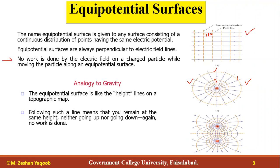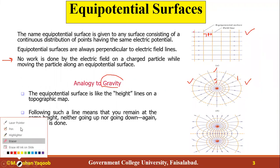Another important thing to remember is that when a charged particle moves along an equipotential surface, no work is done by the electric field. We should always remember that when you are on an equipotential surface, there will not be any work done — the total work done is zero.